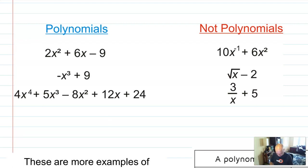there are three examples of polynomials on the left side and some examples of things that are not polynomials on the right side, and it might be good for you to take a look at that and see if you can figure out what makes something a polynomial.